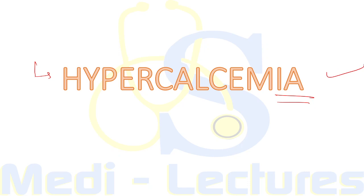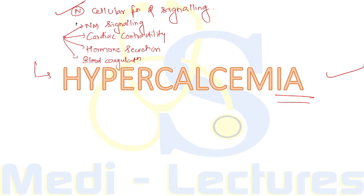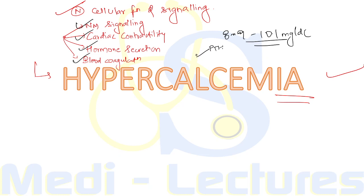Calcium ion plays a very critical role in normal cellular function and signaling. It also regulates diverse physiological processes like neuromuscular signaling, cardiac contractility, hormone secretion, and blood coagulation. Thus it has to be maintained in a very narrow physiological range, which is around 8.9 to 10.1 mg/dL. This range is mainly maintained by parathormone (PTH) and the active form of vitamin D, which is 1,25-dihydroxy vitamin D.